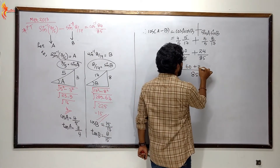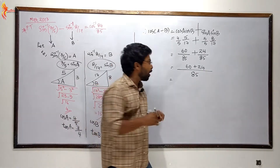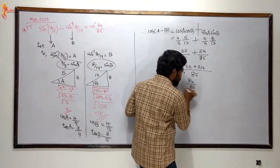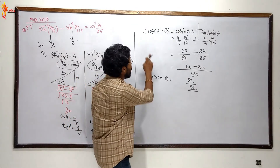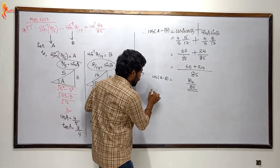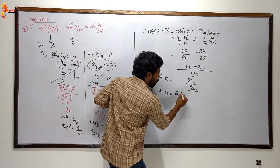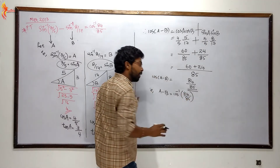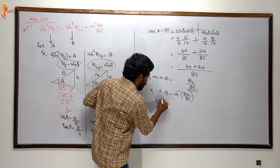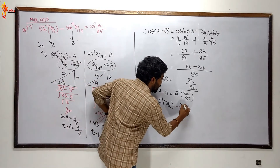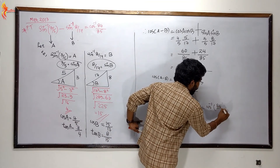60 plus 24 is equal to 84, so the result is 84 divided by 85. Therefore, cos inverse of a minus b equals cos inverse of 84 by 85. Hence, sin inverse of 3 by 5 minus sin inverse of 8 by 17 is equal to cos inverse of 84 divided by 85. Proved.